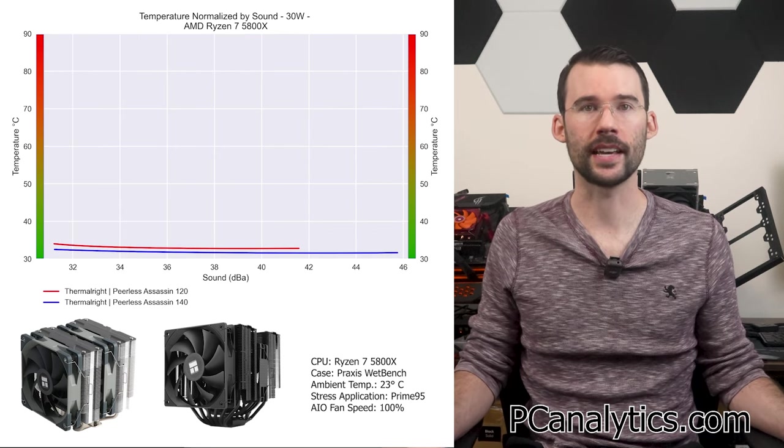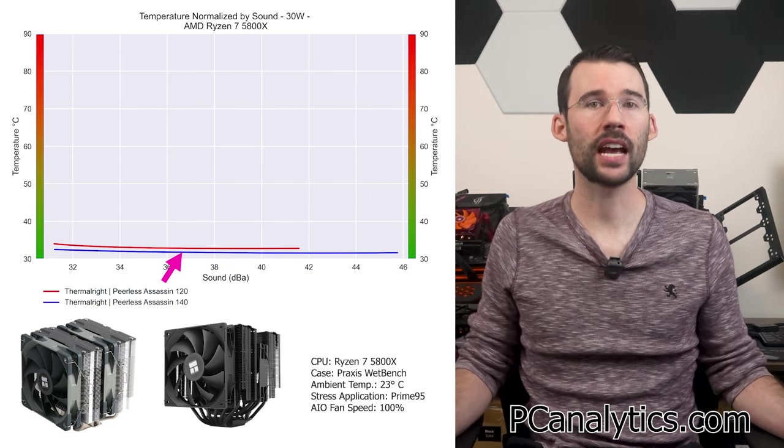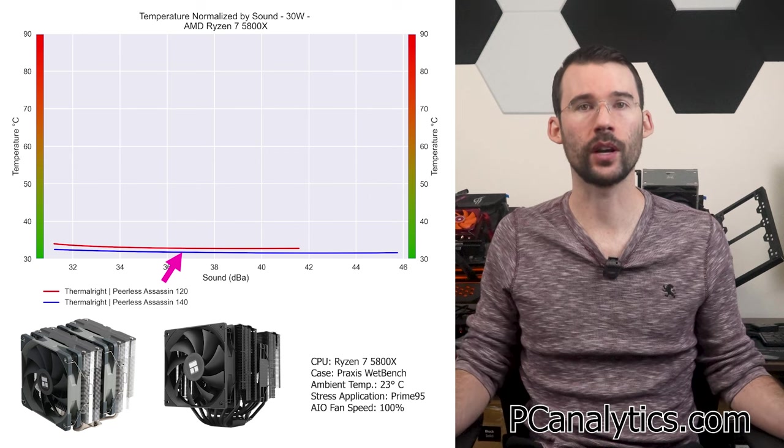In our second set of charts normalized by sound, we have temperature on the left, noise on the bottom, with lower being better. At idle, the Peerless Assassin 140 has slightly better cooling for a given noise level.